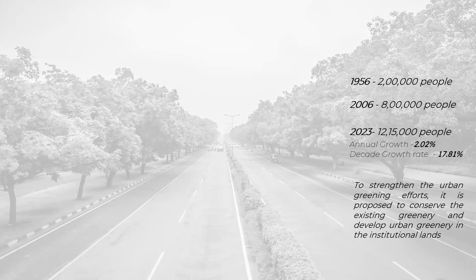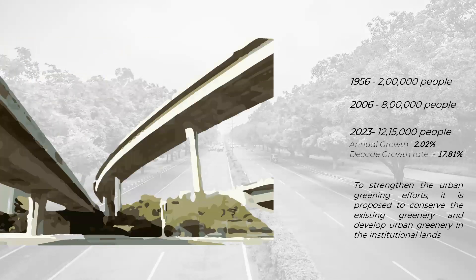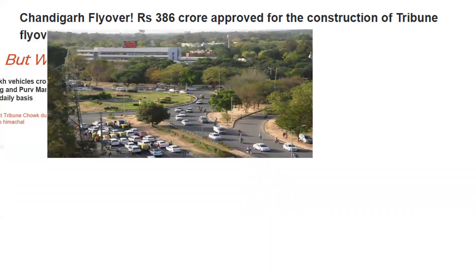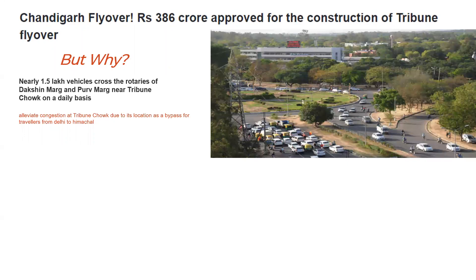However, with the substantial increase in population, the city, which was initially designed for the future, has now outgrown and struggles to accommodate the growing number of vehicles. In response to this issue, the government proposes the construction of Chandigarh's first flyover. The proposal aims to address the problem by diverting traffic and easing congestion at the most busy junction of the city, the Tribune Chowk.